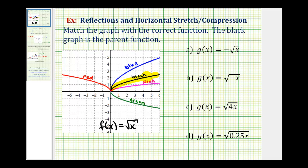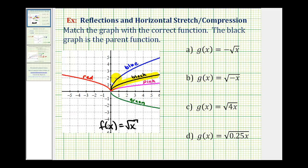If we take a look at the black graph and compare it to the green graph, notice how it's a reflection across the x-axis. Comparing the black graph to the red graph, notice how it's a reflection across the y-axis. Comparing the black graph to the blue and pink functions, it is sometimes hard to tell if the transformation is a vertical or horizontal stretch or compression, but in this case we know it's going to be a horizontal stretch or compression. The blue graph is a horizontal compression and the pink graph is a horizontal stretch of the black graph. Let's do a quick review on reflections and horizontal stretches and compressions.